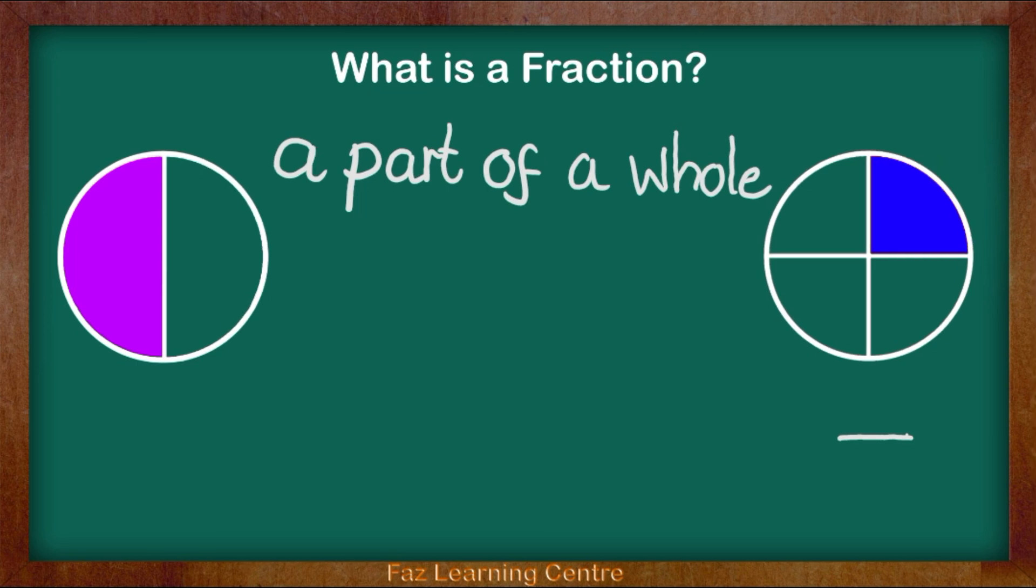So the first thing we're going to ask ourselves is how many parts are there? One, two, three, four. That shows us there are four parts to make a whole circle.